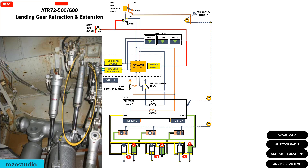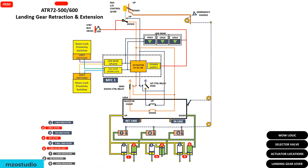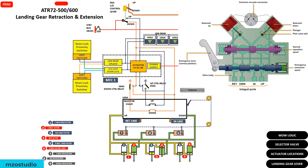This is the limit switch located inside the upload box. Here is the limit switch. This is the proximity switch. This is the landing gear selector, Epsilon 9, and the down solenoid. This is the normal operation. Here is the pressure in the return line, up and down.